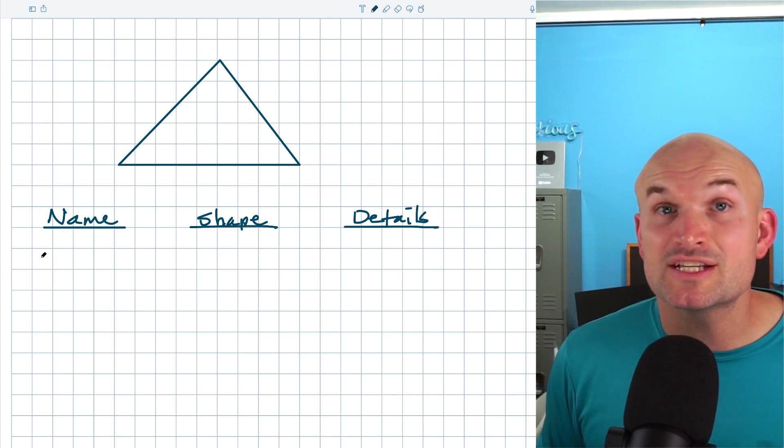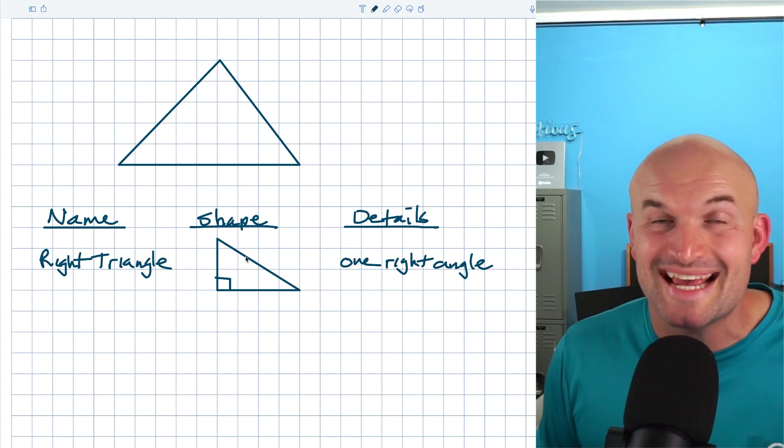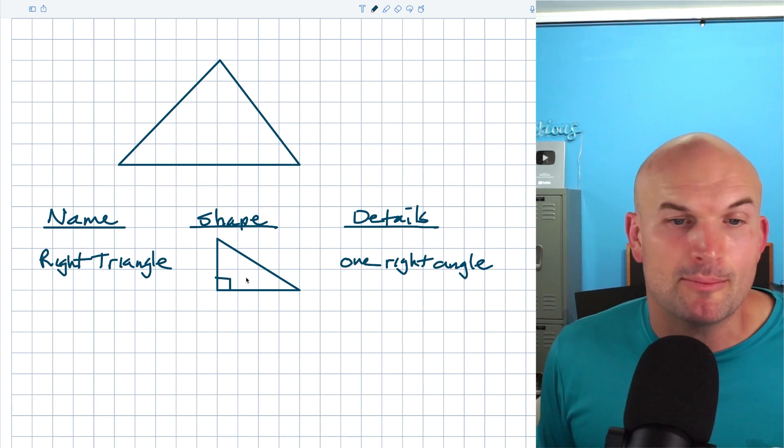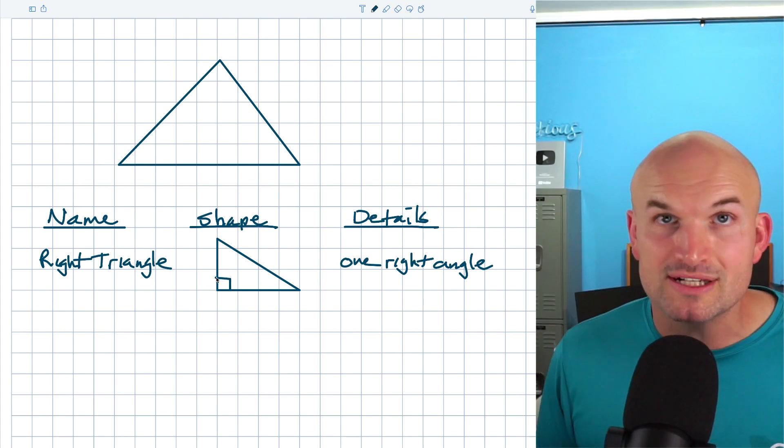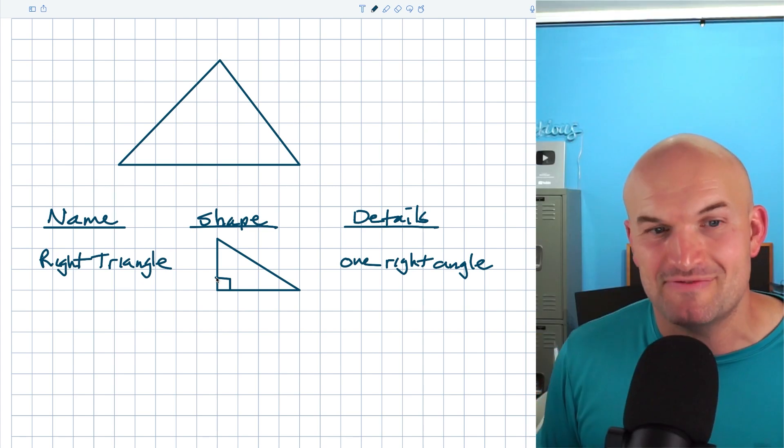So the first triangle we're going to deal with is going to be the right triangle. And the reason why I call it a right triangle is because it has only one right angle. We show that one right angle by representing this box. If you remember when we talked about perpendicular lines, that's also how we represented a right angle, which again, measures only 90 degrees. It's important to also remember that a triangle can only have one right angle, but we'll talk about that more in the next video.